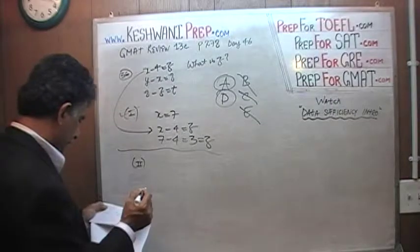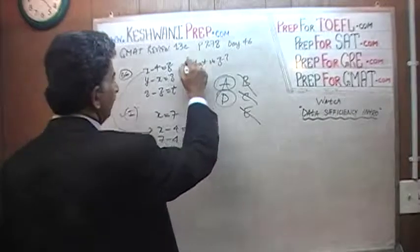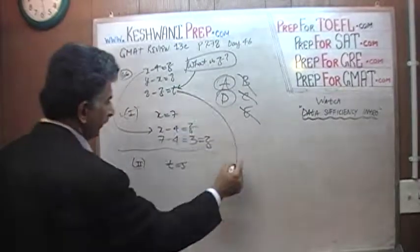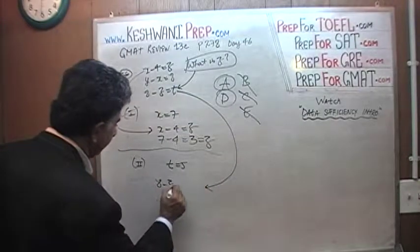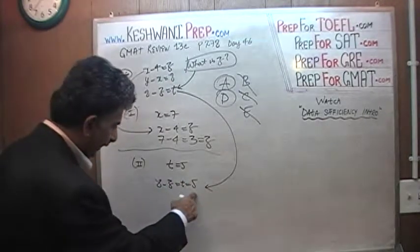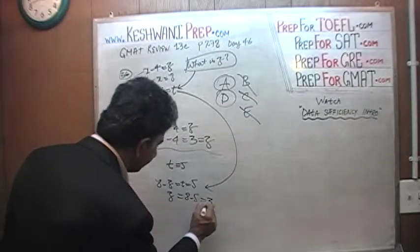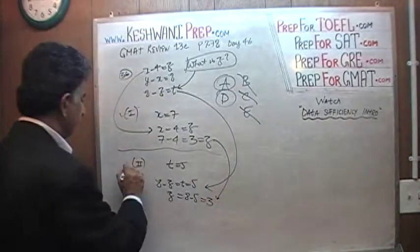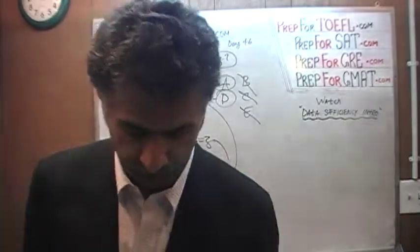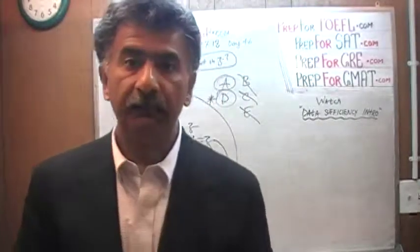The second statement tells us T equals 5. We need z, and the equation 8 minus z equals t tells us 8 minus z equals 5. Rearranging gives z equals 8 minus 5, which is 3 — exactly what we got from the first statement. Since both statements are sufficient to answer the question, the answer is D. See you tomorrow.